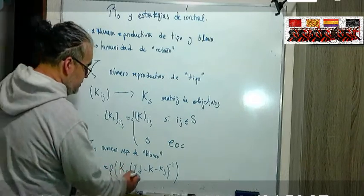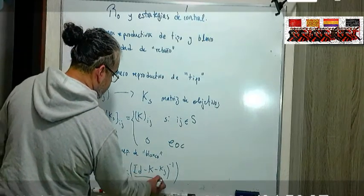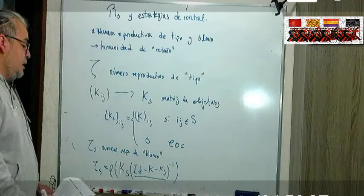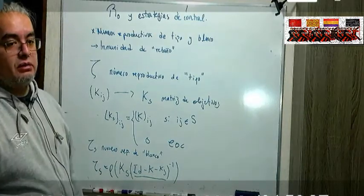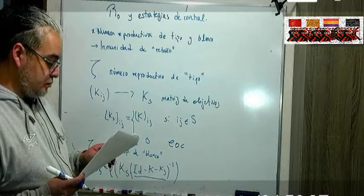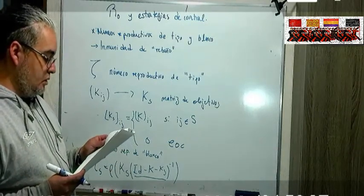Entonces el tau S que es el número reproductivo de blanco o de objetivo se calcula como el ro, el elemento del espectro el supremo del espectro de la KS por la identidad menos K menos KS inverso.